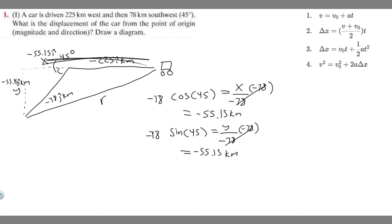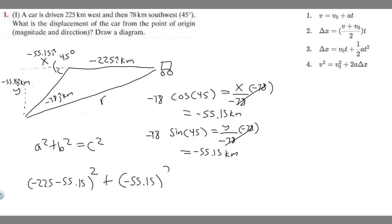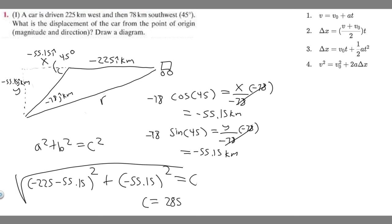Now we have this entire x-length and this y-length. Since this looks like a right triangle, we can use the Pythagorean theorem — a² + b² = c² — to find r. So a is minus 225 minus 55.15, squared, plus b which is minus 55.15, squared, equals c squared. Taking the square root gives c equals 285.52 kilometers.